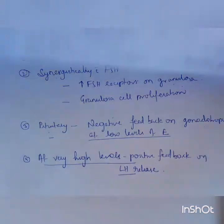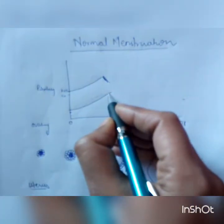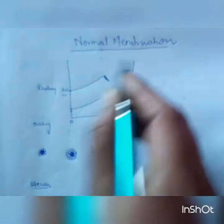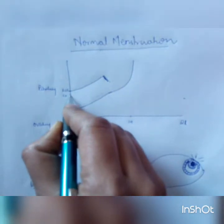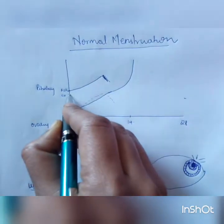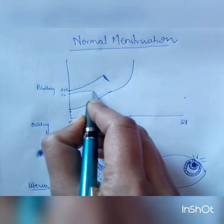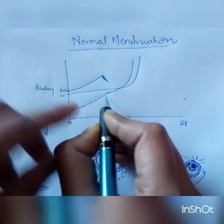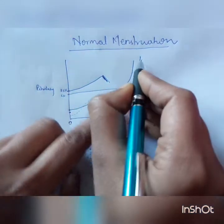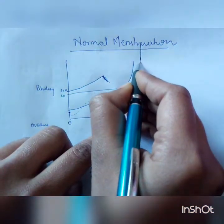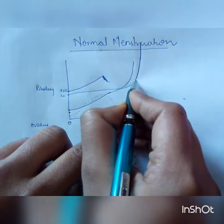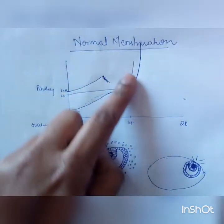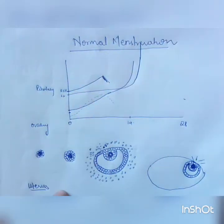With this positive feedback, as estrogen goes on increasing, LH — which was dormant until now — starts increasing. Because of this estrogen surge, there is an LH surge. So, what is responsible for an LH surge? It is the estrogen surge — the rise in estrogen causes the LH surge.